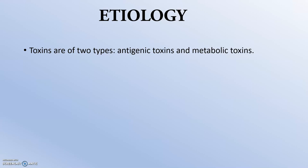Moving to the etiology — toxins are of two types. The first is antigenic toxins, which are structural parts of the bacteria or organism itself acting as the toxin. The second is metabolic toxins, which are produced during the metabolism. Antigenic toxins are pre-formed toxins, while metabolic toxins are produced inside the body during metabolism.